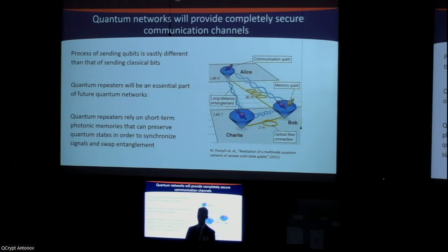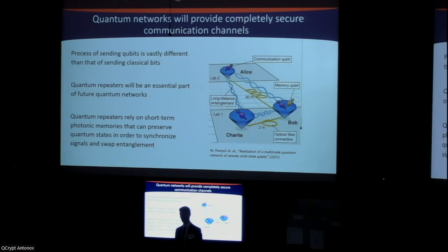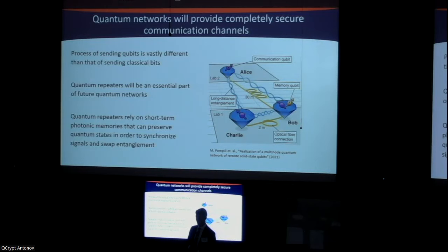Quantum networks promise to provide impressive capabilities such as distributed quantum computing, quantum sensing, and completely secure communication — which is why we're here for cryptological reasons. The process of communicating in a quantum network will be vastly different from a classical network. Due to the no-cloning theorem, we can't clone a quantum state, so we can't use classical repeaters. This gives rise to the need for a quantum repeater, which enables long-distance quantum communication by swapping entanglement.